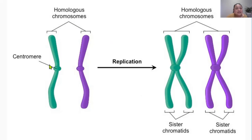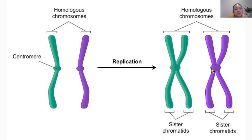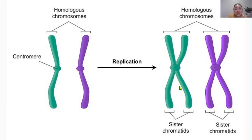Homologous pairs are different from sister chromatids. Sister chromatids — green and green — are identical. But homologous pairs — green and purple — are not identical. Each homolog in the homologous pair, green versus purple, comes from either mum or dad, while sister chromatids are the result of DNA replication. It's extremely important to understand the difference between homologous pairs of chromosomes and sister chromatids, especially for when we discuss the stages of meiosis.